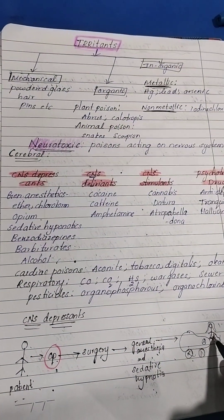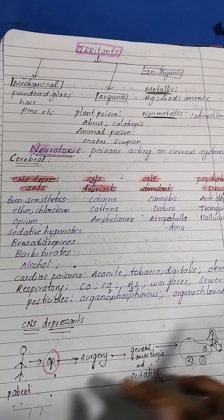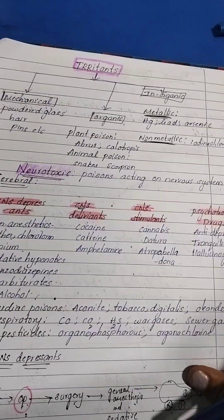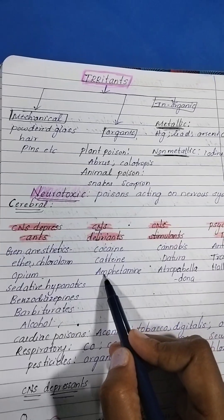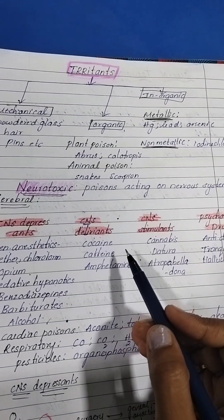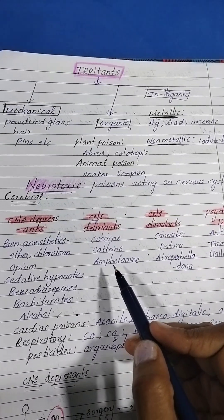By this you can remember. This is the way I remembered and I hope you guys like this. CNS delirants cause delusions and hallucinations.